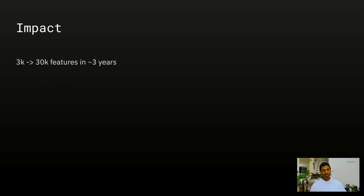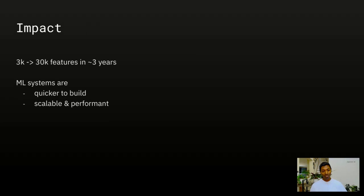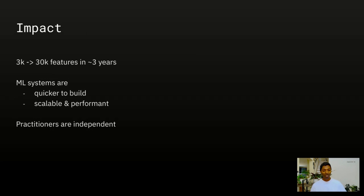The impact of Cronon has been pretty far and wide at Airbnb. We went from using 3,000 features to close to 30,000 features in about three years. As a result, not only did the number of models built increase, but also the number of features used in each model increased. ML systems are now faster to build and out of the box more scalable and performant. More importantly, practitioners are more independent — a data scientist who previously had to work with a team of systems engineers, with the prototyping phase taking a couple of weeks but the ML system building phase taking many months or even a year, no longer faces that bottleneck.